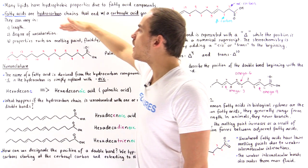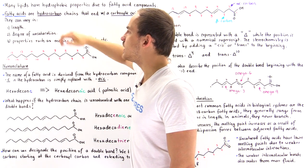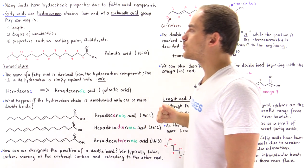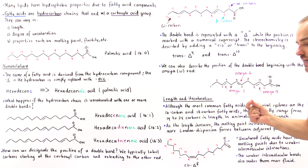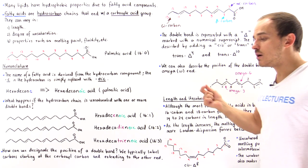Now let's move on to degree of unsaturation and how exactly the number of double bonds affects the properties of fatty acids.